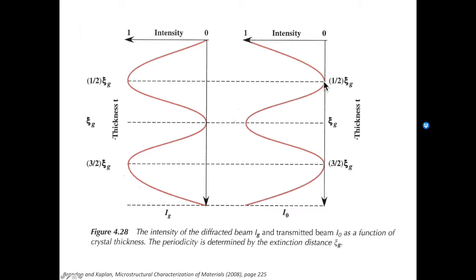By playing with the sample thickness, you can make the transmitted beam disappear. When the sample thickness is ξc, or we are looking at a point at position ξc in the sample, the intensity of the transmitted beam is at its maximum.